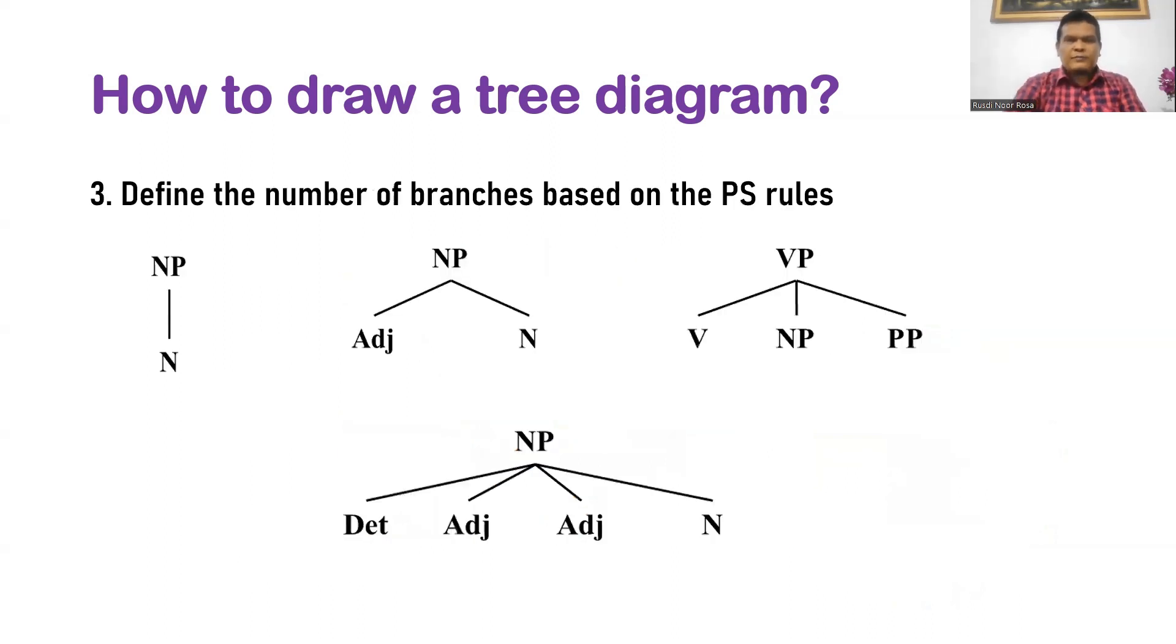Third, define the number of branches based on the PS rules. The number of branches depends on the PS rules. In other words, you may have only one branch, two branches, three branches, four branches, or even five branches. It depends on the applicable PS rules.